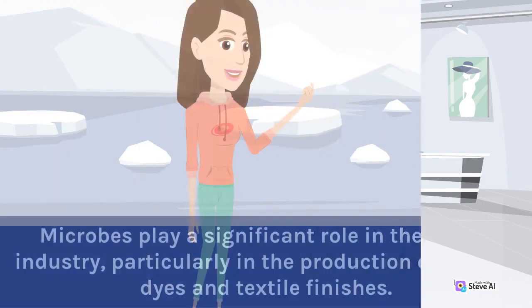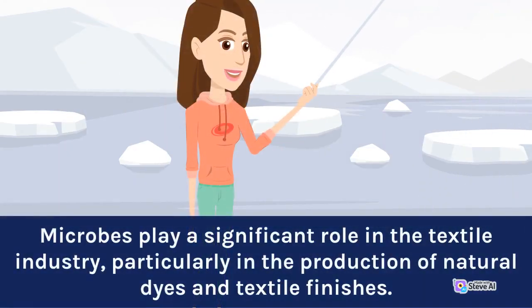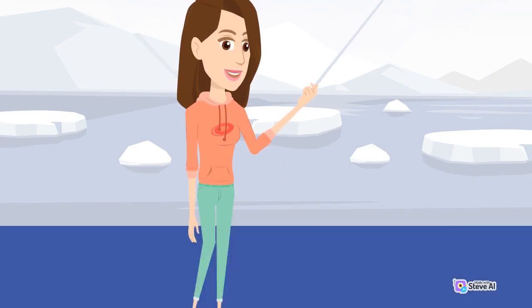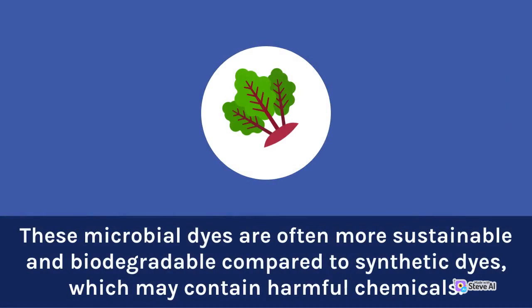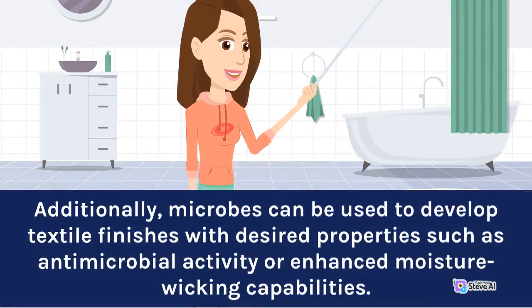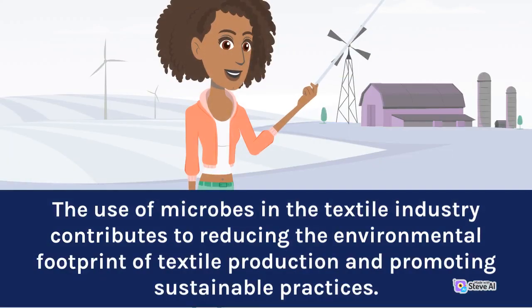Textile Industry. Microbes play a significant role in the textile industry, particularly in the production of natural dyes and textile finishes. Some bacteria and fungi possess natural pigments that can be extracted and used as dyes to color fabrics. These microbial dyes are often more sustainable and biodegradable compared to synthetic dyes, which may contain harmful chemicals. Additionally, microbes can be used to develop textile finishes with desired properties such as antimicrobial activity or enhanced moisture-wicking capabilities. The use of microbes in the textile industry contributes to reducing the environmental footprint of textile production and promoting sustainable practices.